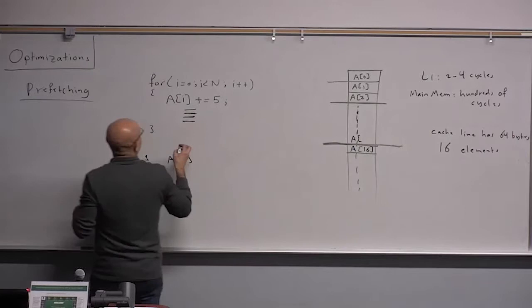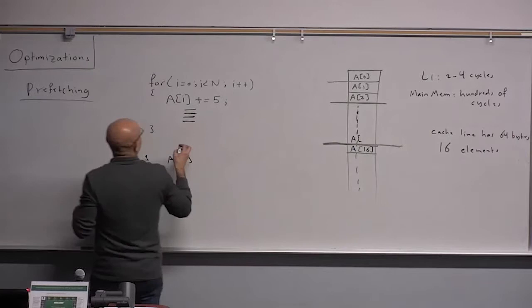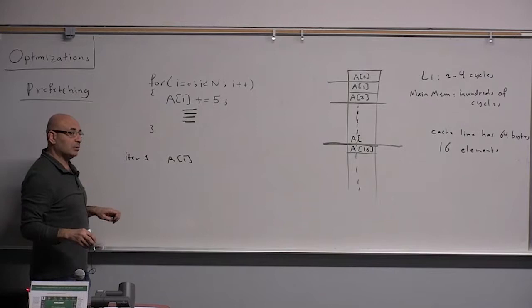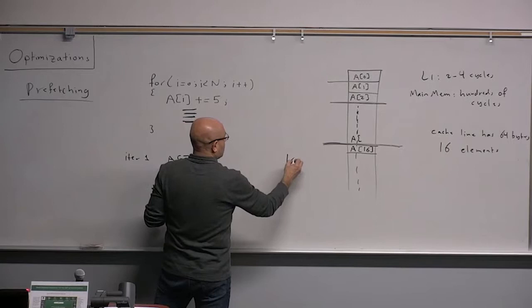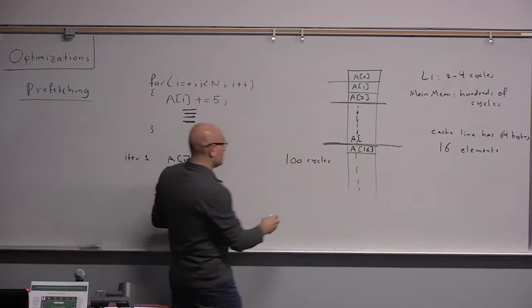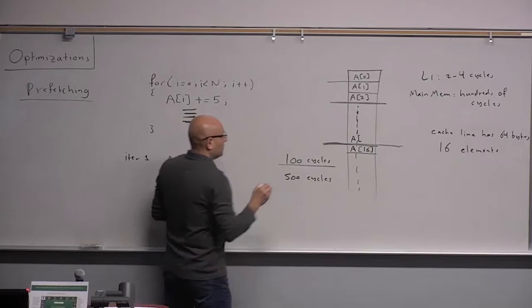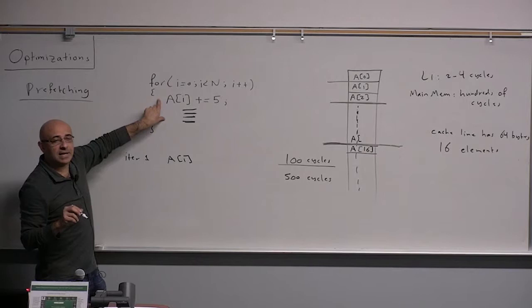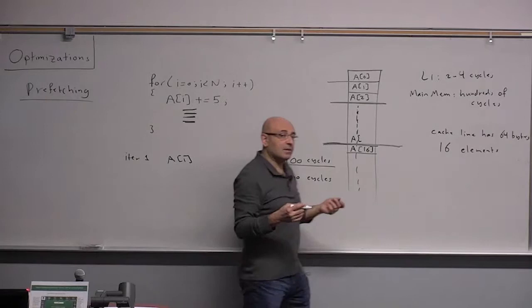For pre-fetching ahead, we need to know how much time it will take for this loop to execute — how much time will it take for the body of the loop to execute. If the body of the loop is 100 cycles and memory access is 500 cycles, the compiler will have to base this on a rough estimate of the number of cycles needed to execute the body of the loop.